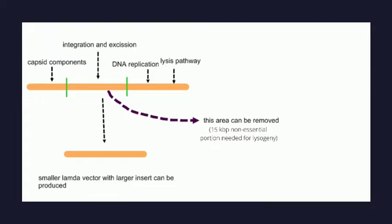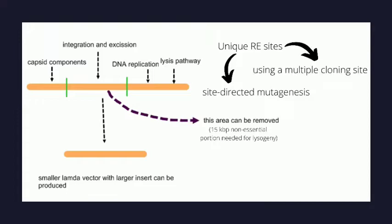Various unique restriction enzyme sites were also created in these vectors by either site-directed mutagenesis or using a multiple cloning site (MCS). These vectors were categorized into insertional and replacement vectors, of which the latter could load much bigger inserts.